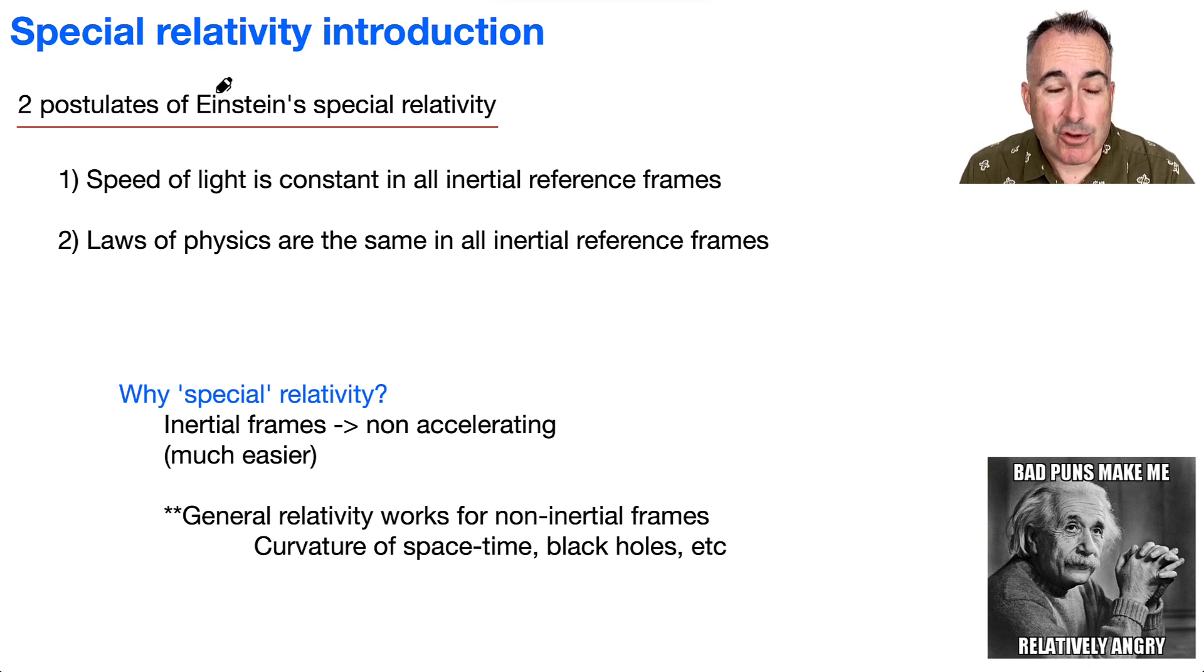You need to know these two postulates of Einstein's special relativity. You need to know these. Okay, so this is for an exam. You definitely need to know these. So first of all, you need to know the first one, that the speed of light is constant in all inertial reference frames.